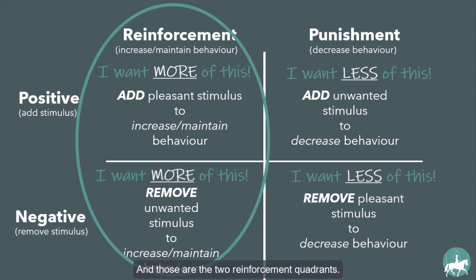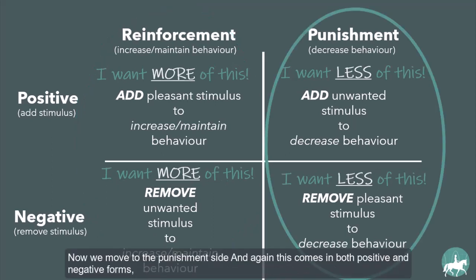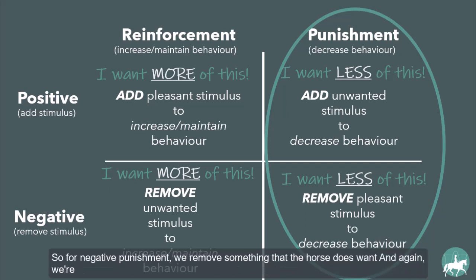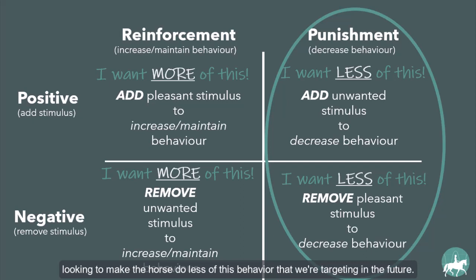Those are the two reinforcement quadrants. Now we move to the punishment side, which also comes in both positive and negative forms, but with punishment we're looking to decrease a behavior — we want less of that behavior. Positive punishment means we add an unwanted stimulus to decrease the likelihood that the horse will perform that behavior again. For negative punishment, we remove a stimulus that the horse does want, again to make the horse do less of the targeted behavior in the future.